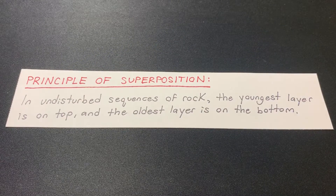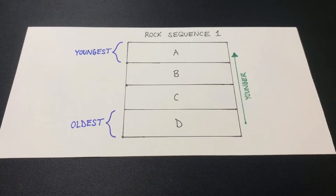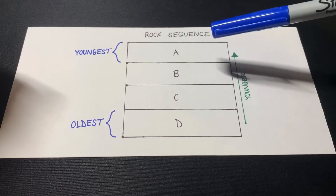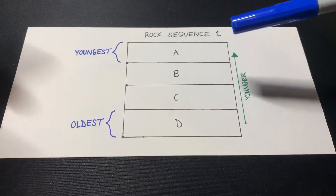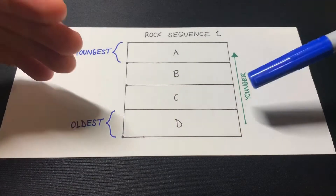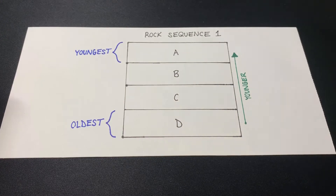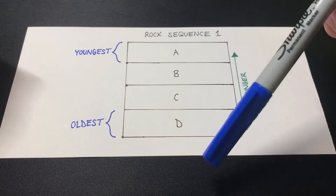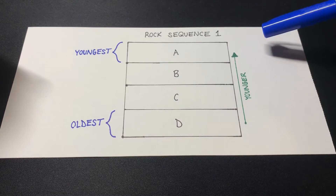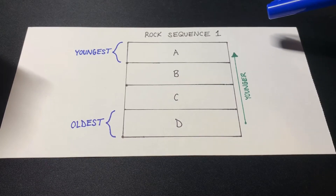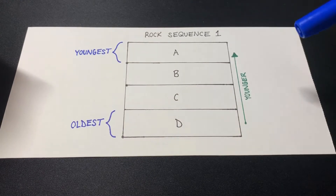So let's take a look at what I mean by that. This is the most basic example, and what I laid out for you guys is rock sequence one. Generally, it is not going to be square like this in nature — obviously, there are going to be a lot of different shapes with the layering — but I did this to simplify it. So basically, what we have is rock layers A, B, C, and D, and I have an arrow pointing upward. This arrow indicates that as you go higher in the rock layers, they get younger, and vice versa. If you drew an arrow downward, the rock layers would be getting older.